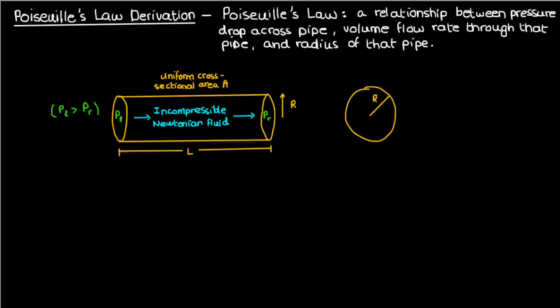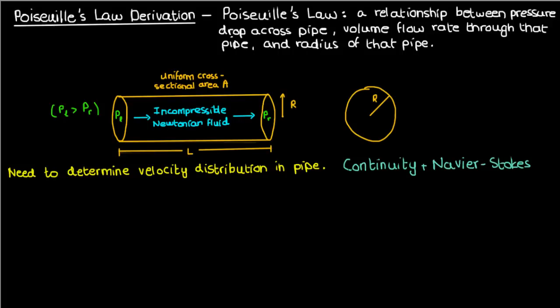In other words, the pressure difference would give rise to a fluid velocity. We want to ultimately determine the distribution of the fluid velocity in this pipe, because that's how we'll find the relationship between the pressure drop and the pipe radius. That's how we'll derive Poiseuille's Law. Fortunately, there are equations we can solve to determine the exact distribution of the fluid velocity, and those include the continuity equation and the Navier-Stokes equations.